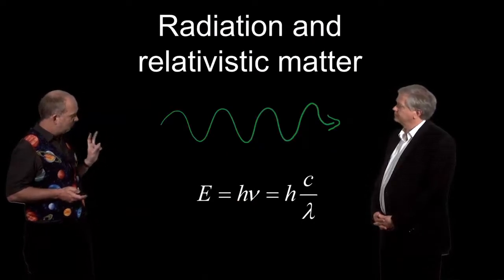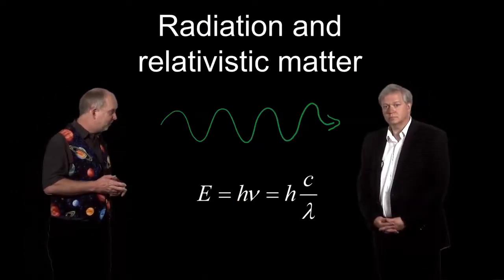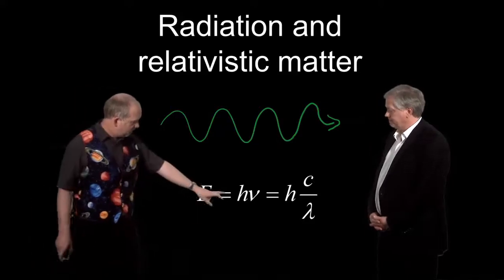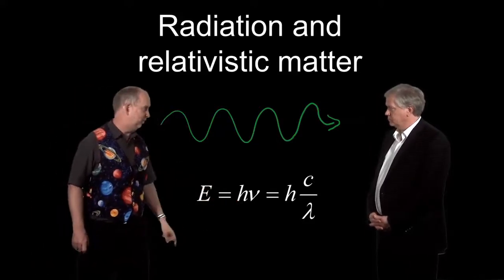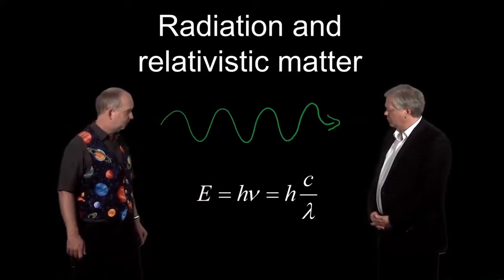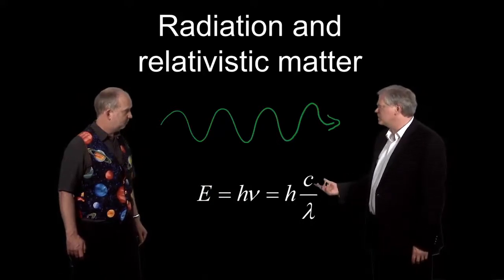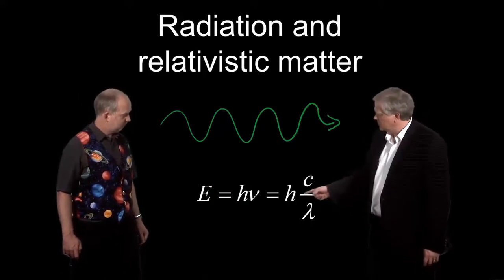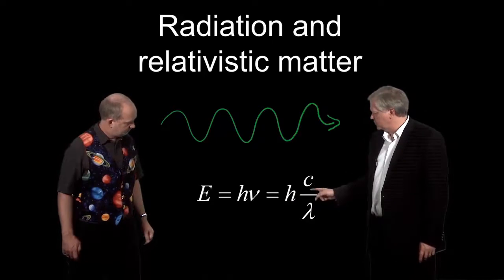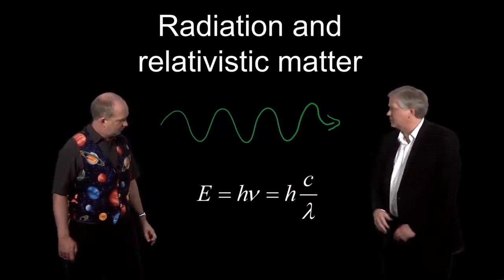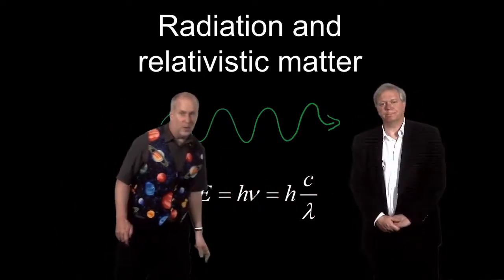We know from quantum mechanics that the energy of a photon, and the same thing applies to anything close to the speed of light, is going to be Planck's constant times its frequency, hν. Or, if we like to work in wavelength, which I always find a little easier to think about, hc/λ, where I've replaced ν with c/λ. So c is speed of light and λ is just the wavelength.